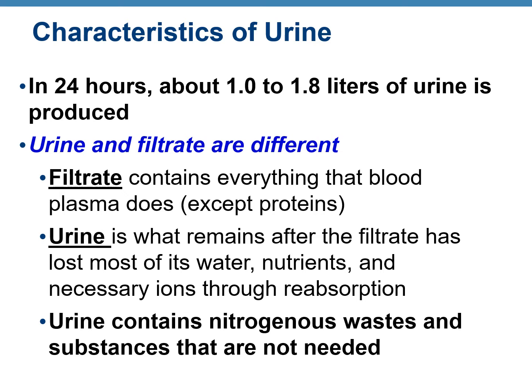What are the features of urine? In a day, the human body produces about 1.5 to 2 liters of urine. Please keep in mind that urine and filtrate are different. Filtrate contains everything that comes out of the blood plasma from the glomerulus into the Bowman's capsule — it does not contain blood cells or proteins. Urine is the end product of the filtrate — what remains after the filtrate has lost much of its water, ions, and nutrients through reabsorption.